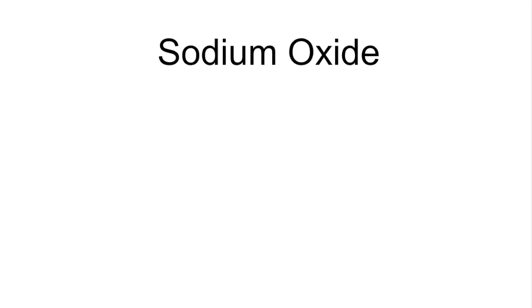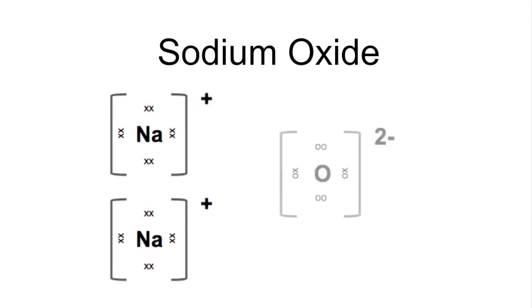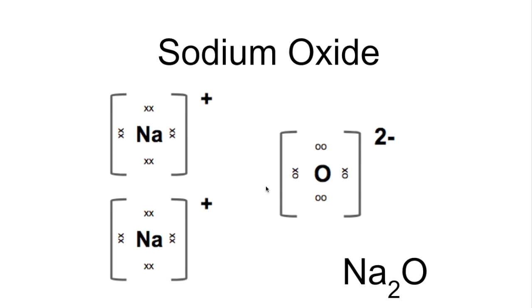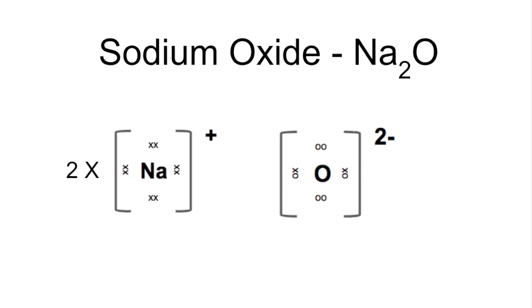So sodium oxide now. Sodium is in group one, so it's going to lose one electron to get a full outer shell. Oxygen is in group six, so it needs to gain two. So we're going to need two sodium ions now to satisfy one oxygen. And so we draw two separate sodium ions and one oxide ion. Again, don't forget your square brackets and your charges. And the formula of sodium oxide is going to be Na2O. And just with magnesium chloride, you can show that like that as well.